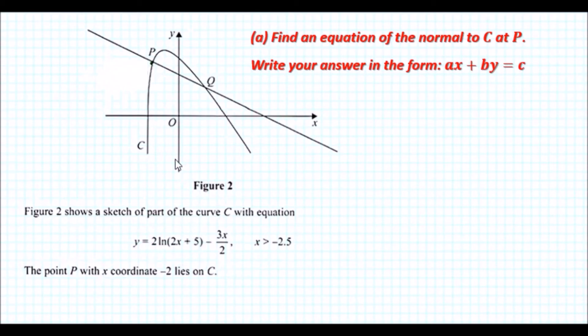The equation is for x greater than minus 2.5. We know that the point P with x coordinate minus 2 lies on curve C. We need to find an equation of the normal to C at point P, which must be written in the form ax + by = c, where we know x is minus 2.